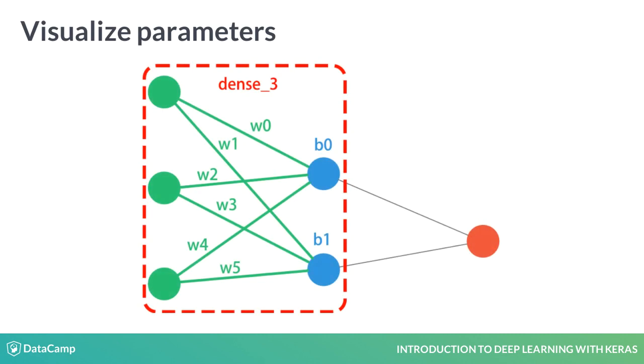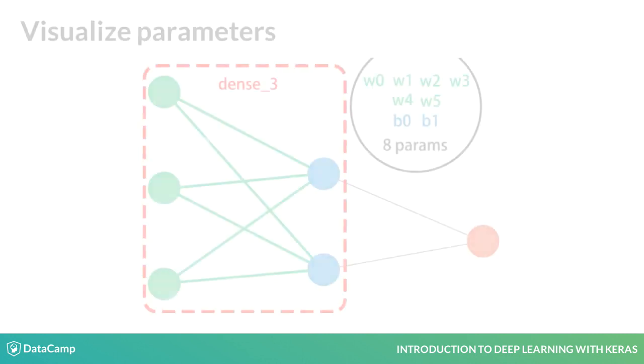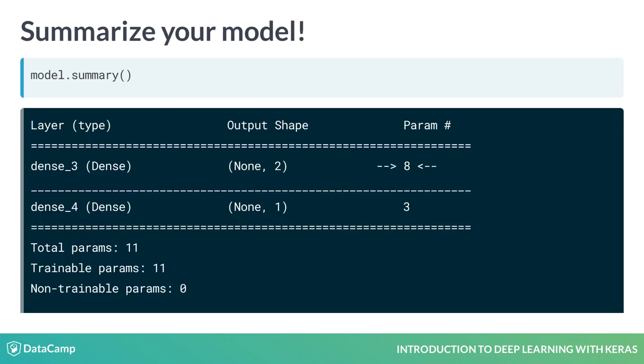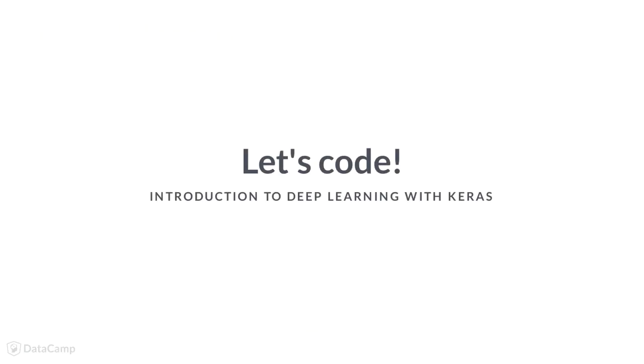That's why we see that this layer has eight parameters. Six parameters or weights come from the connection of the three input neurons to the two neurons in this layer. The missing two parameters come from the bias weights B0 and B1, one for each neuron in the hidden layer. These add up to eight different parameters, just what we have in our summary. It's time to code.